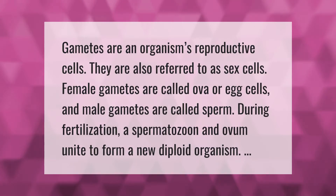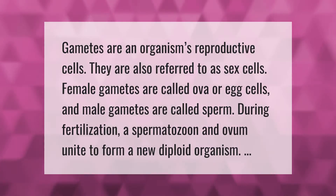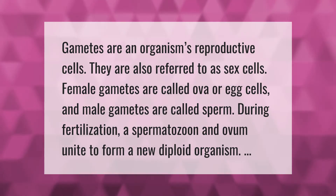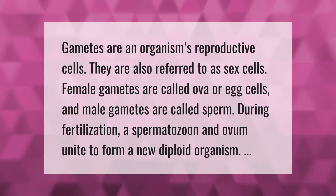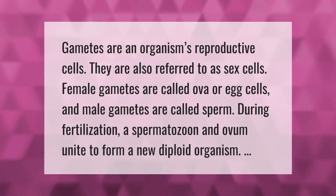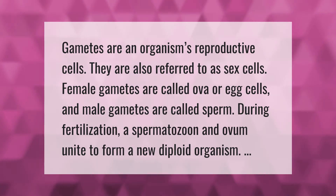Gametes are an organism's reproductive cells. They are also referred to as sex cells. Female gametes are called ova or egg cells, and male gametes are called sperm. During fertilization, a spermatozoan and ovum unite to form a new diploid organism.